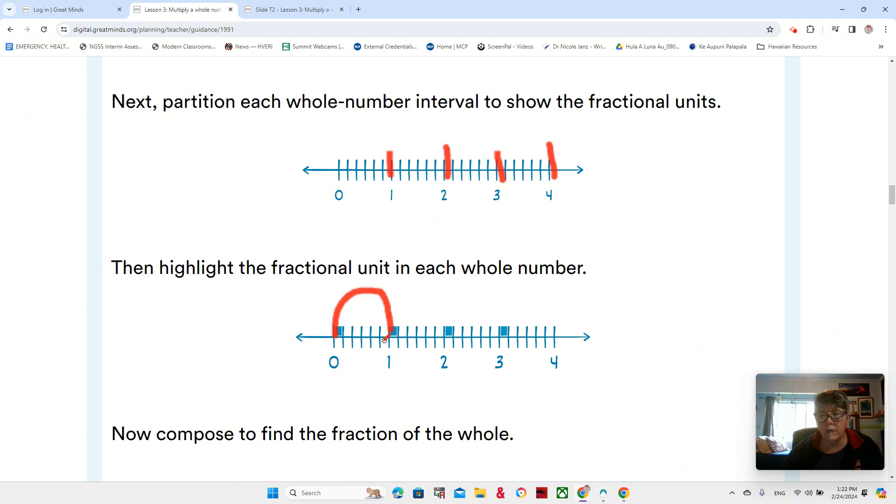This is one-sixth of one. This is one piece and one-sixth of it. Between zero and one is one, between one and two is two, between two and three is three, and between three and four is four. And here are my sixths.